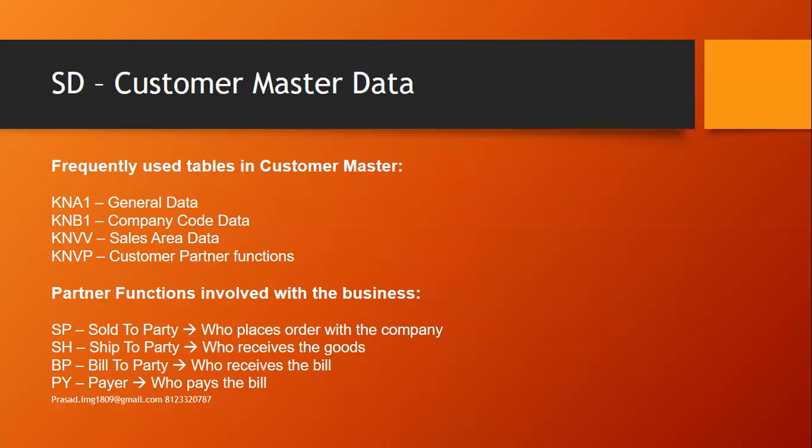In an e-commerce example: suppose you are sitting in Hyderabad and you want to send a mobile phone through an e-commerce portal to a friend in Mumbai. In this scenario, the sold-to party is you, the ship-to party is your friend in Mumbai, the bill-to party is also you. If you choose cash on delivery, then your friend pays the bill, making the payer different. All four partner functions can thus be different customers.